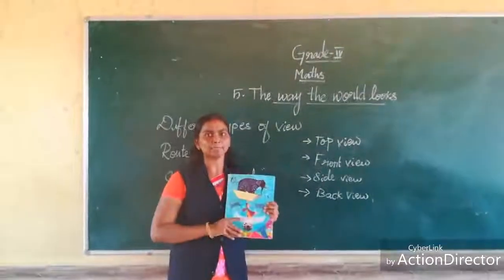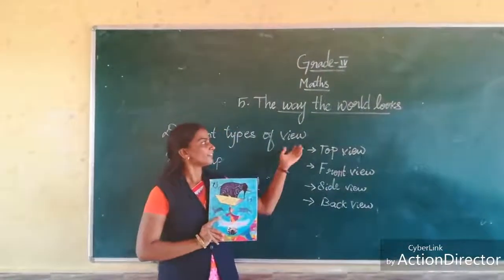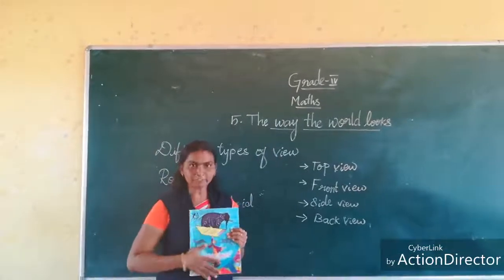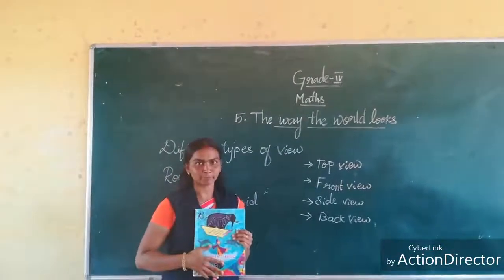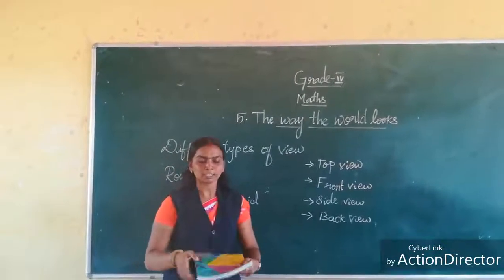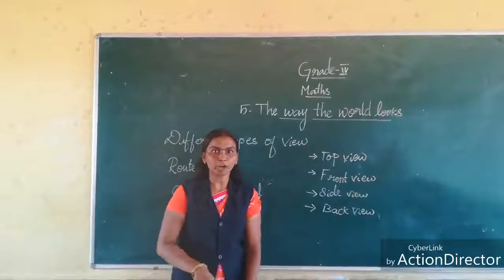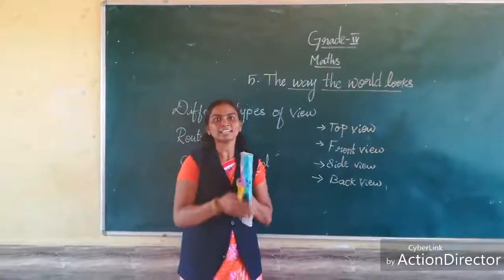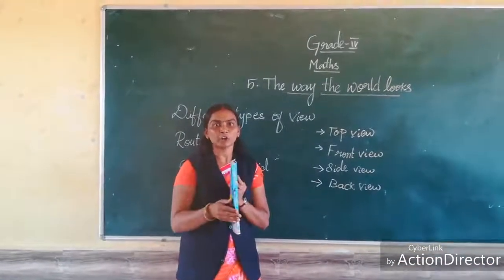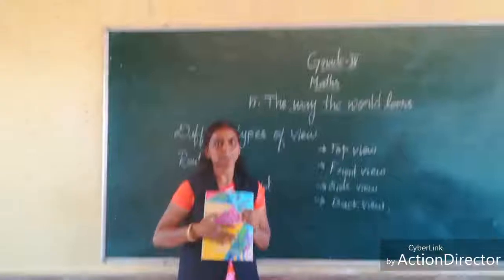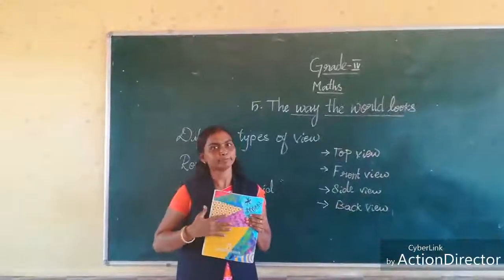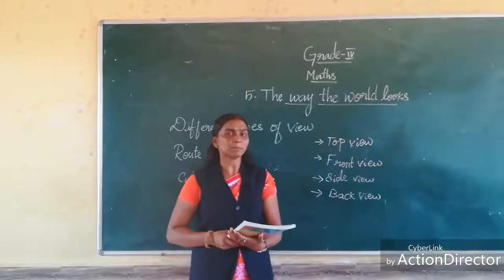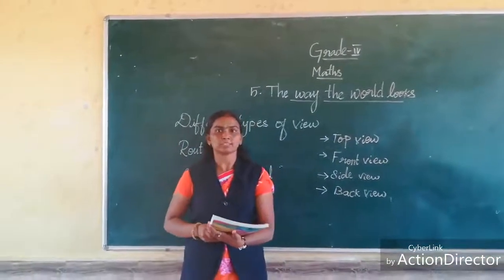Now I will show an example for the different types of view. This is the front view of a book. And this one is the top view of the book. And this is the side view of the book. And this one is the back view of the book. Now open your book — I will explain briefly about it.